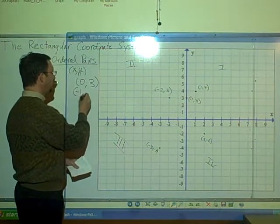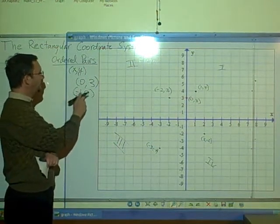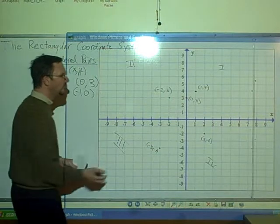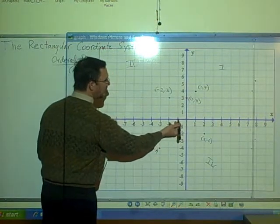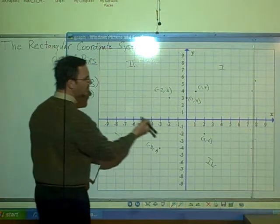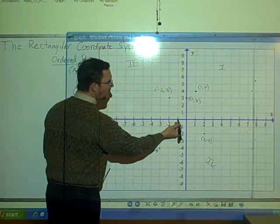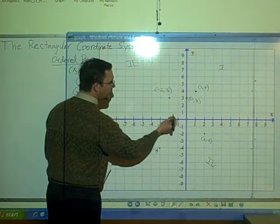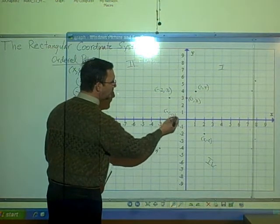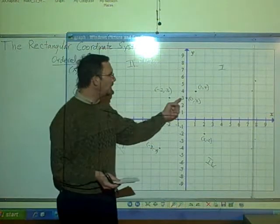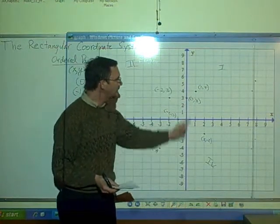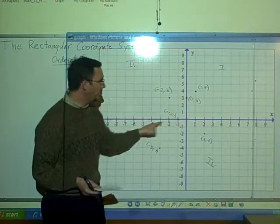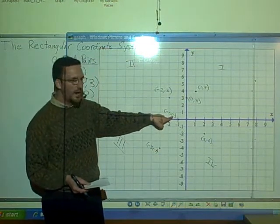Another example along the same lines would be to plot the point negative 1, 0. Here, on the x-axis, I move over to the left, so that I'm at negative 1. And then my y-coordinate is 0. So once I get to negative 1, for y, I don't go up or down. I just stay on the x-axis. So this point here is the point negative 1, 0. All points which are on the y-axis will have 0 as their x-coordinate. And every point which is a point on the x-axis will have 0 as its y-coordinate.